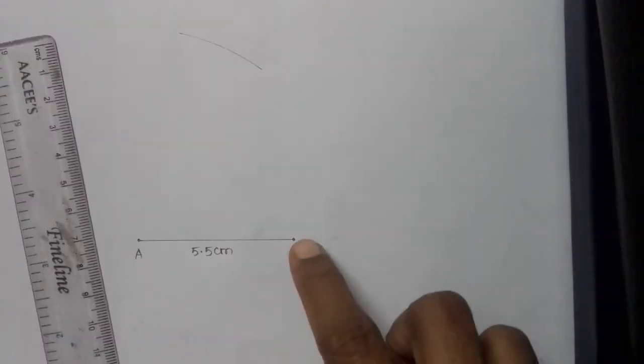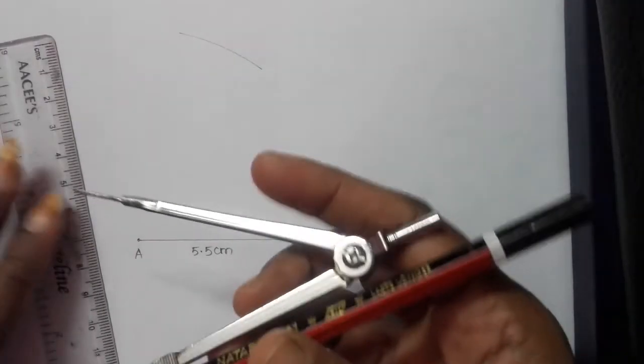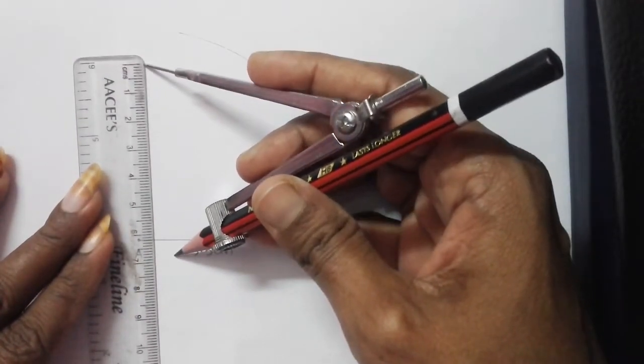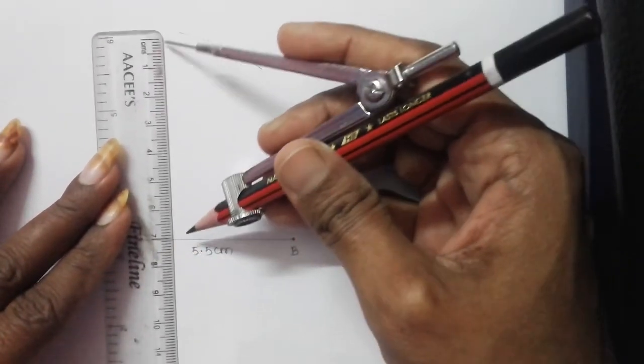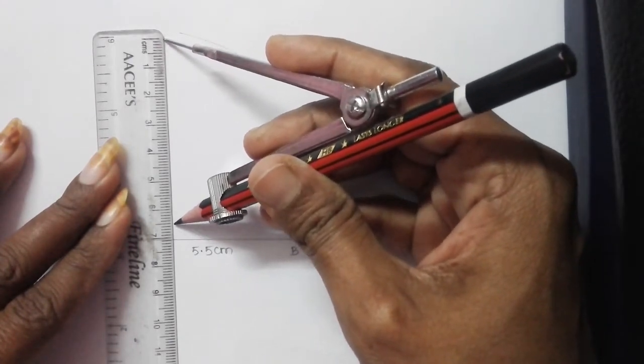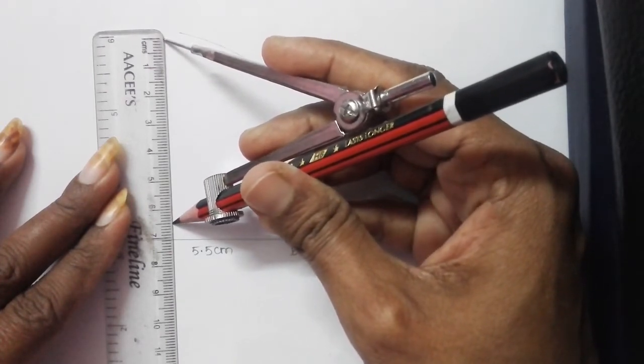Now, BC. The length is given as 6.5 centimeters. So, now, again, use your scale and measure the length from 0 to 6.5. Between 6 and 7 is 0.5. So, this is 6.5.